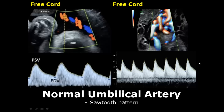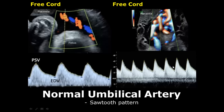The vertical plane on the spectral graph indicates velocity. The highest velocity is known as peak systolic velocity and the lowest velocity is called end diastolic velocity. This is the normal cardiac cycle in the umbilical artery and it is the normal pattern in spectral Doppler for the umbilical artery.